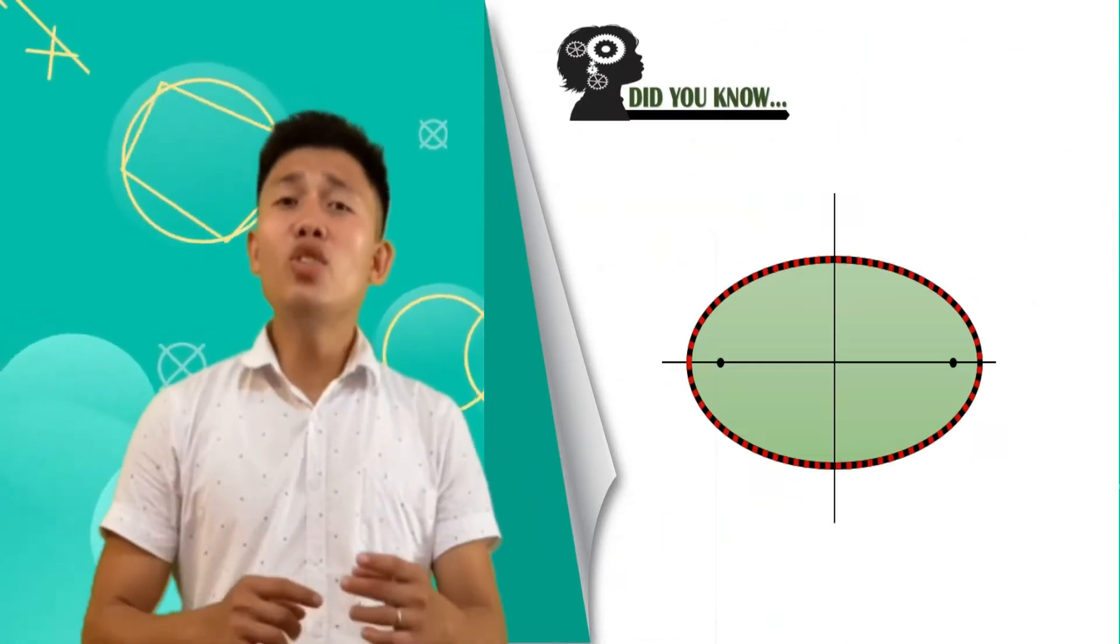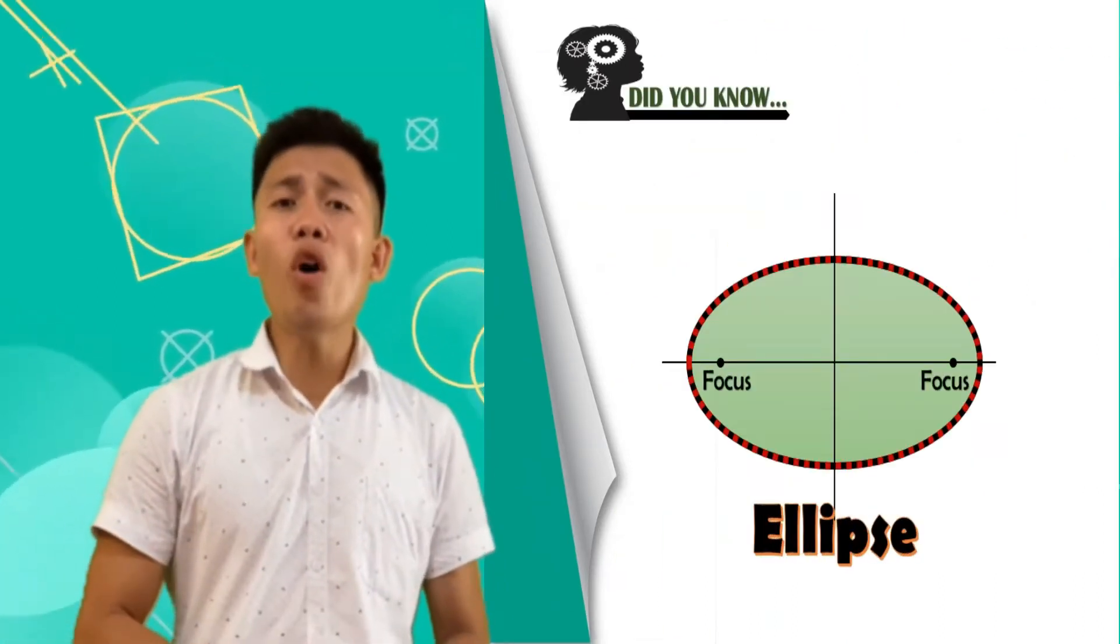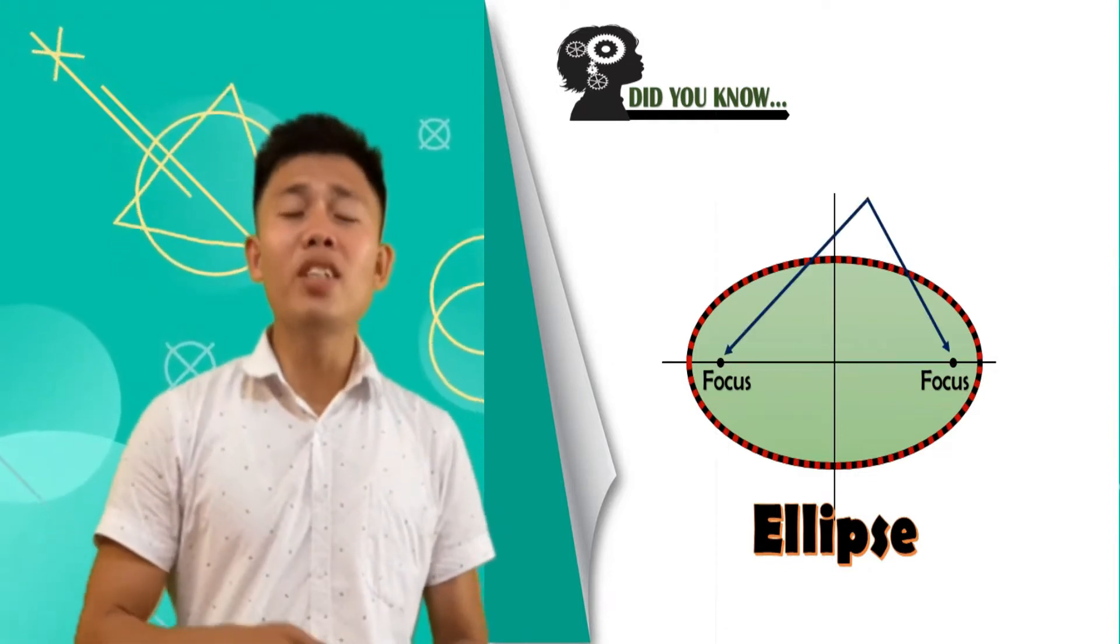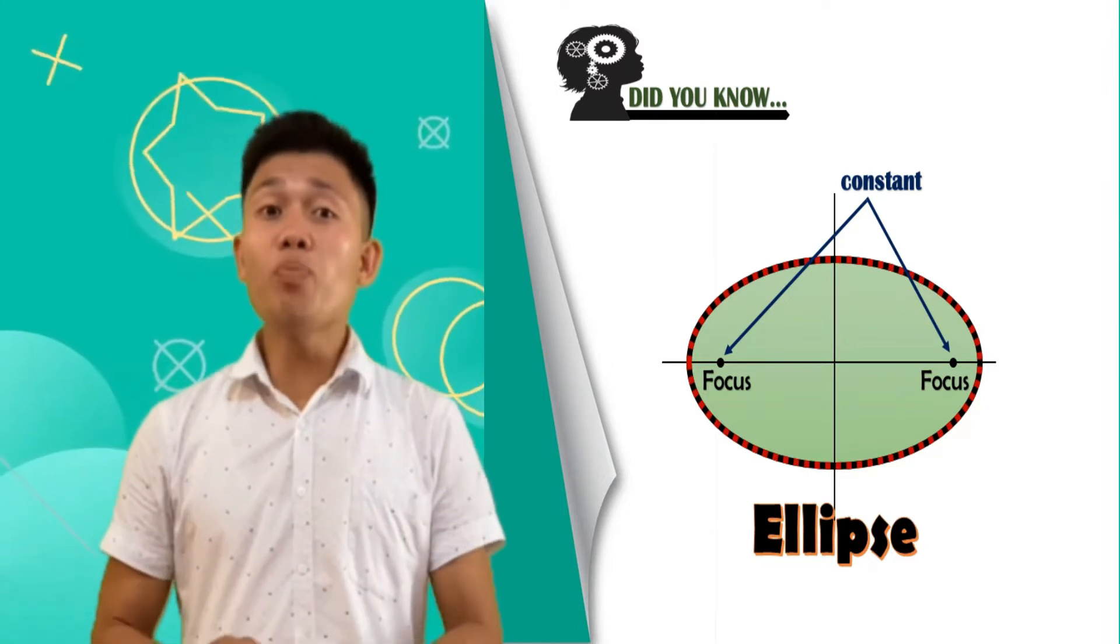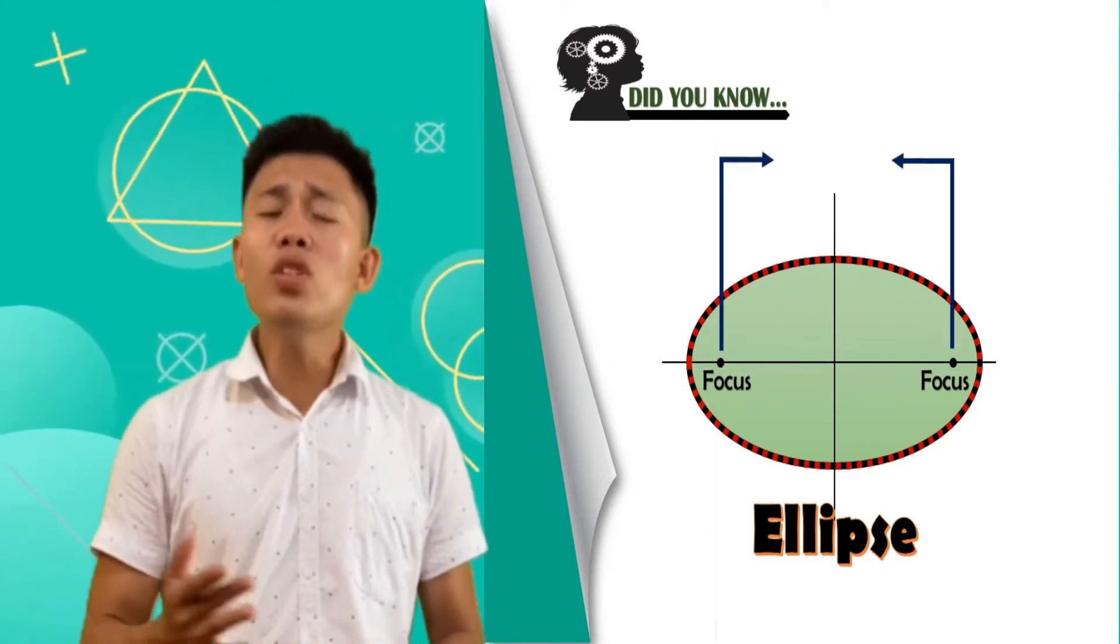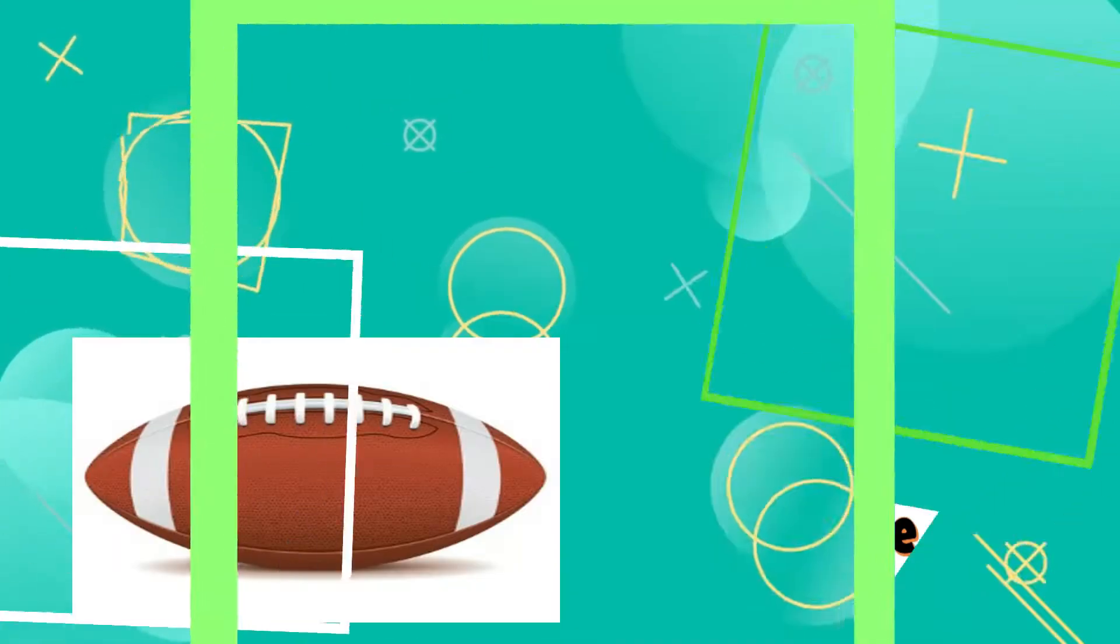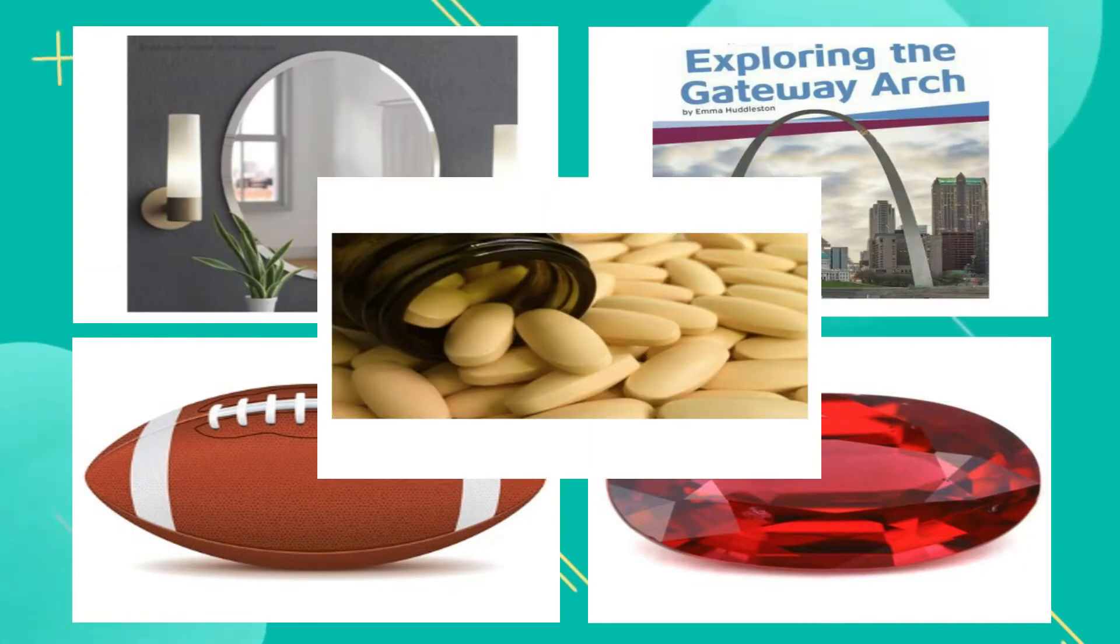Before answering, did you know that the ellipse is the locus of all points in the plane such that the sum of their distances from two fixed points in the plane is constant? The fixed points are known as the foci. These are examples of ellipse in real life.